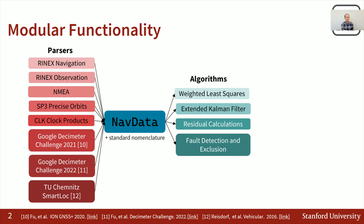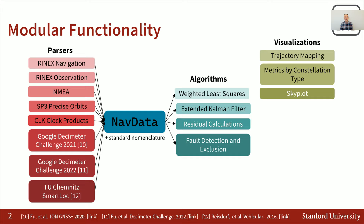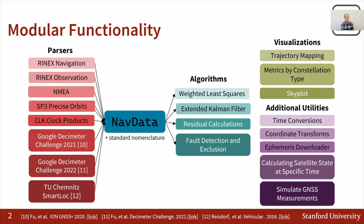Once everything is in the standardized nav data class, you can make use of the various algorithms. We have algorithms for estimating the positions of receivers, calculating residuals, and performing fault detection and exclusion. We also have visualization functions for mapping receiver trajectories on a map, doing skyplots, and looking at individual rows of data. Behind the scenes there are many utility functions including coordinate transforms, automatically downloading ephemeris, and calculating satellite positions.